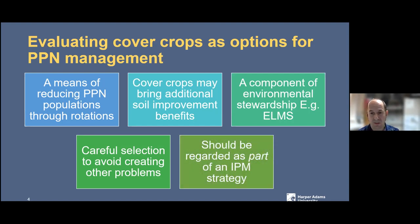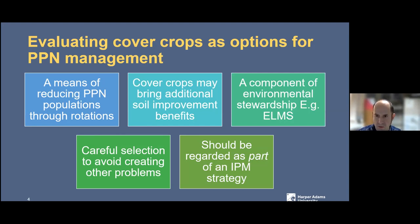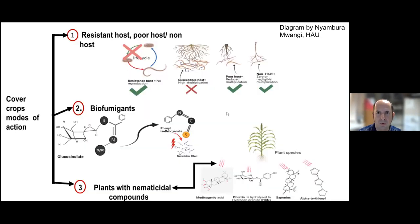Cover crops definitely should be regarded as part of an IPM strategy. You're trying to reduce part of that population so that strategies used later on have reduced reliance placed upon them. They work synergistically with other strategies, whether that be different types of chemical control, varietal resistance, rotation — all the sorts of things you'd think about in an IPM program.